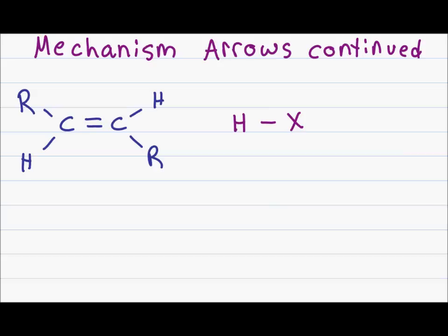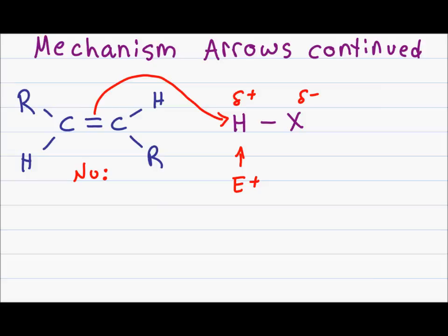A second common mechanism involves the pi electrons in a carbon to carbon double bond attacking a different molecule. Pi electrons go above and below the molecule, making them more negative and therefore nucleophilic. In a molecule such as HX where X is a halogen, the halogen is partially negative making the hydrogen partially positive and electrophilic. As a result, the nucleophilic pi bond will reach out and grab the hydrogen of the HX molecule. Since hydrogen can only have one bond, the bond holding hydrogen to X will collapse onto X itself.